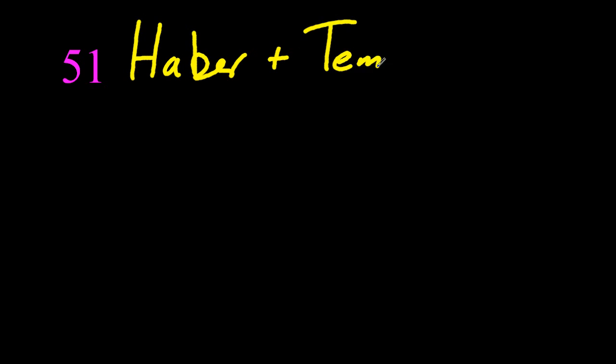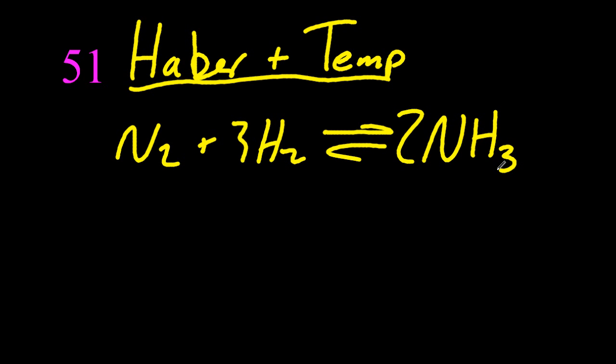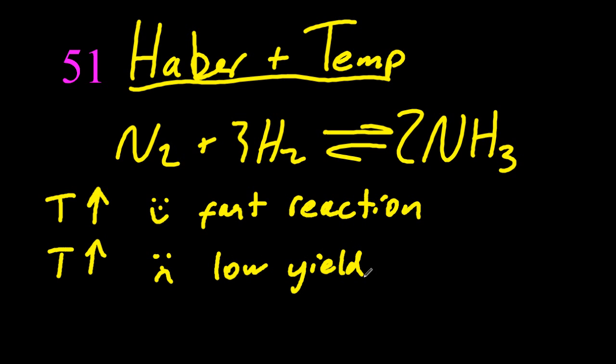Number 51, the Haber process. The IB loves the Haber process. Let's look at the effect of temperature. If temperature is very high, chemistry is always going to be very fast, so your process will be very quick. But there's a problem with having a high temperature equilibrium. Since this is exothermic in the forward, I'm going to get a low yield, so maybe I'll get 10% really fast. That's a problem.